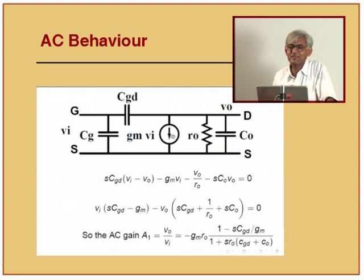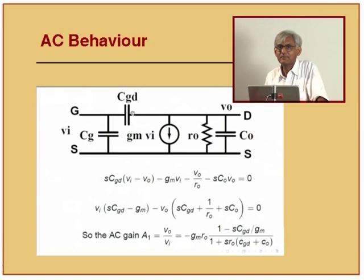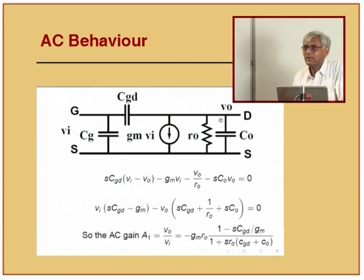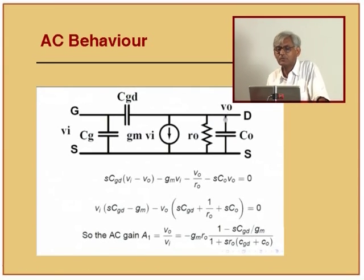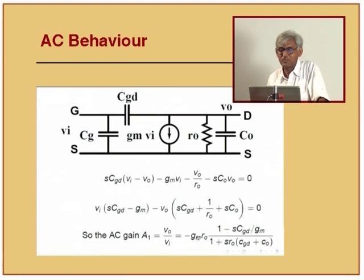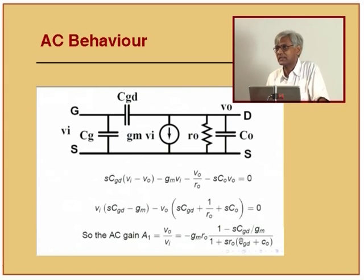This is an equivalent circuit for fluctuations - an incremental circuit, not a DC circuit. The fluctuating part of the current is Gm times VI. To do the algebra, you sum the current at the output node: the incoming current is (VI - V0) times the conductance of CGD; outgoing currents are Gm times VI, V0/R0, and the capacitor current. Collecting all terms in VI and V0 separately gives the new expression for V0/VI - this is a first pole circuit as expected, like 1 + sRC.